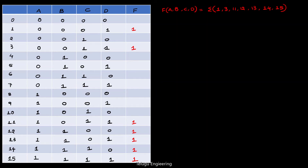Hello guys, so in this video I have a boolean function. I know that the multiplexer is constructed. This is the given function, the min function, and it is active at 1, 3, 11, 12, 13, 14, 15.